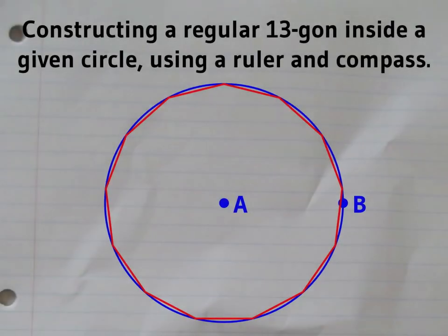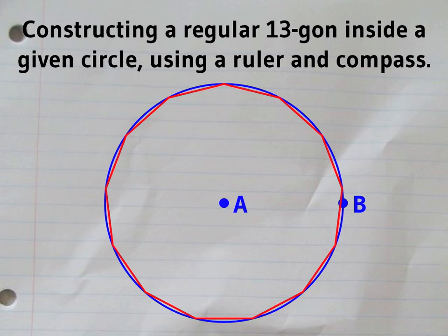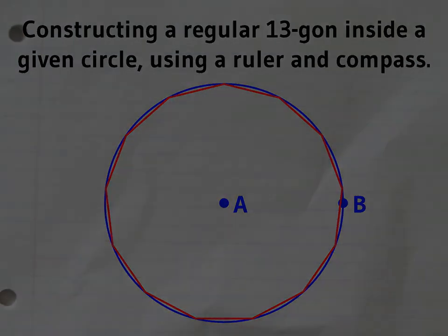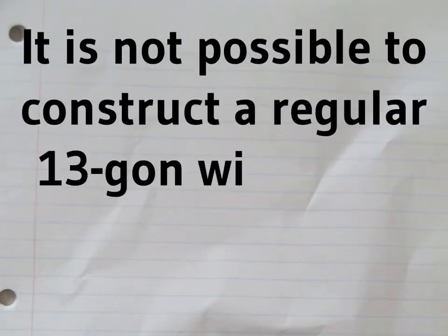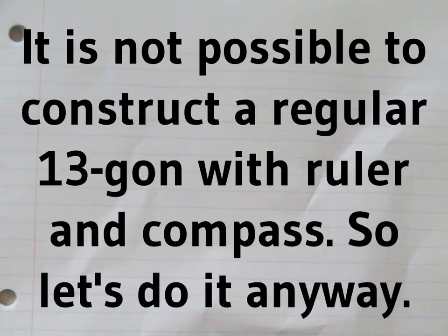It's not actually possible to construct a regular 13-sided figure with a ruler and a compass. That's because 13 is a prime number, but it's not one more than a power of 2.